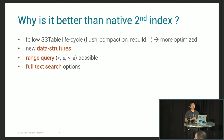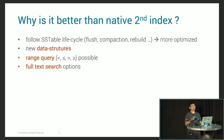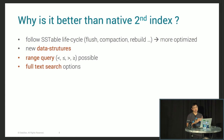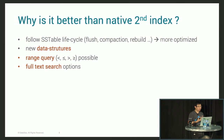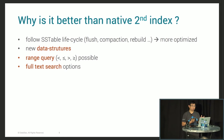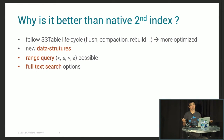Why is it better than the native secondary index? First, because it follows the SSTable lifecycle, we can perform some optimization in the index structure. With SASI, we have a new data structure which is a B+ tree-like data structure. You can do range queries now with the secondary index, and we also have a full-text search option.